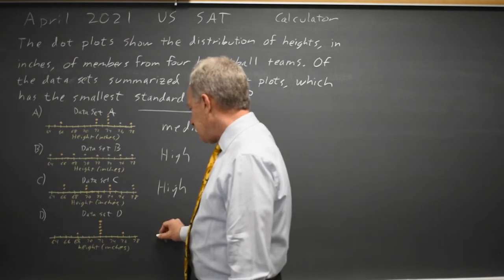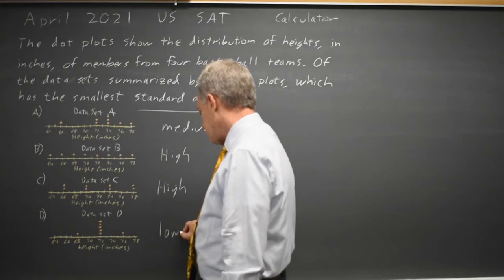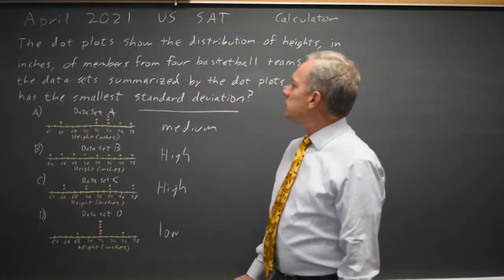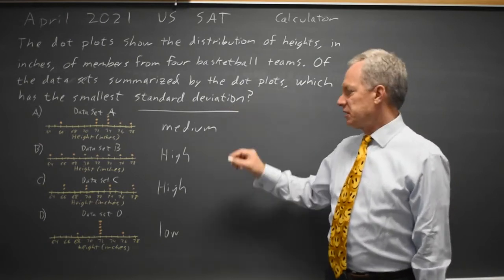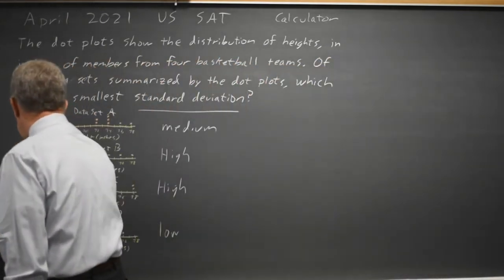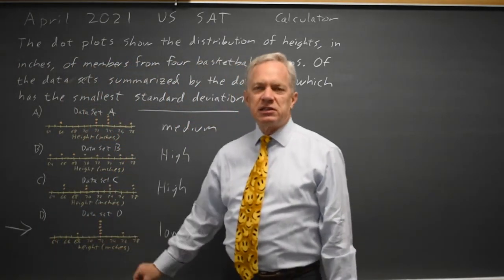So, data set A, I'm sorry, data set D has the smallest or lowest. College Board is asking for the data set with a small standard deviation, and that is data set D, because the points are the least spread out.